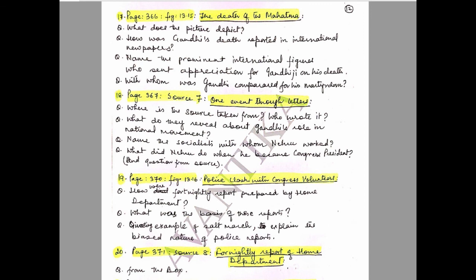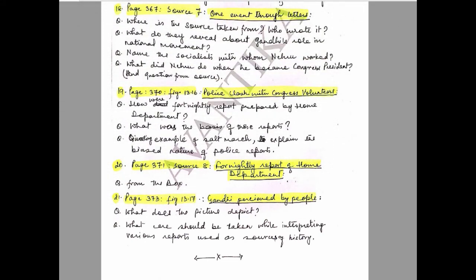Question 18: Page 367, Source 7 — 'One Event through Letters.' Questions: Where is the source taken from, and who wrote it? What do they reveal about Gandhi's role in the national movement? Name the socialist with whom Nehru worked. What did Nehru do when he became Congress president?